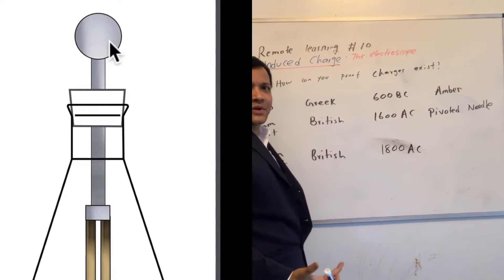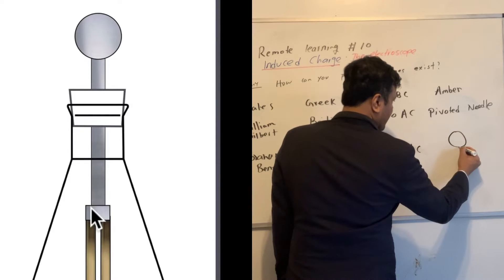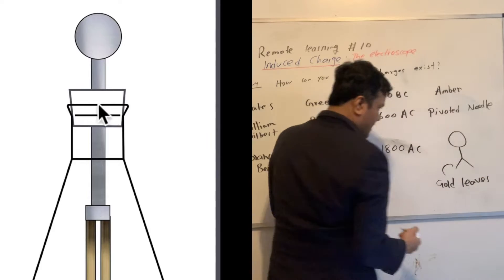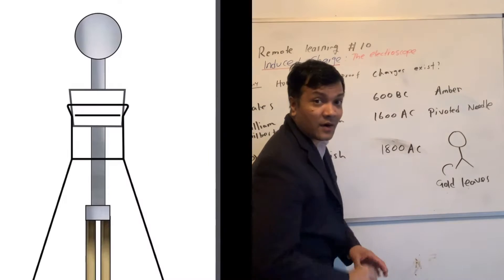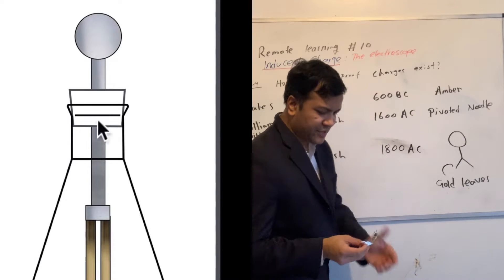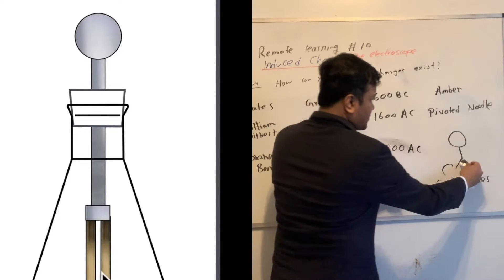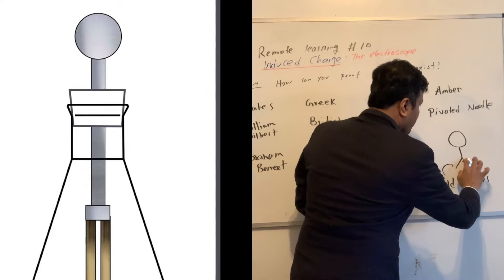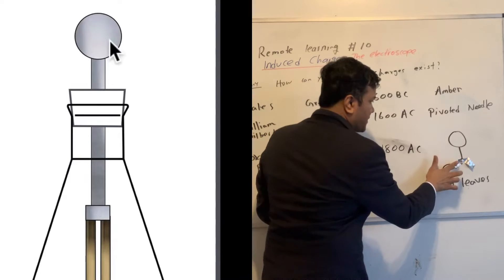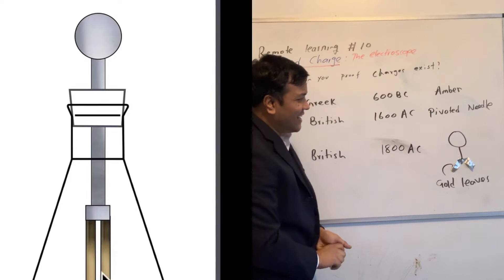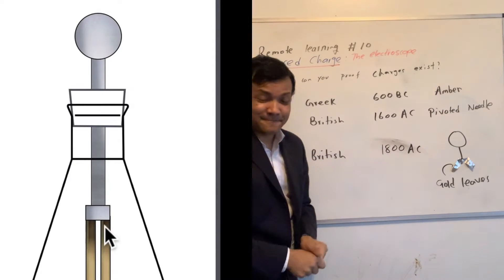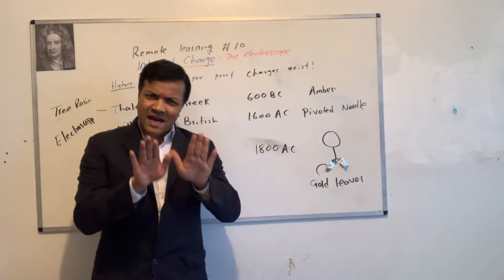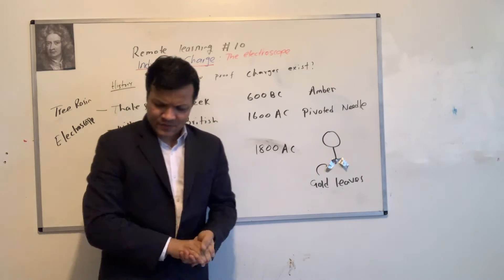I'm going to use this to make a model. I do not have gold leaves, but I do have aluminum foil which I found in my kitchen. This is what aluminum foil is. This is as sophisticated as I can make it in my home quarantine. Now I'm going to show you how the electroscope works using Abraham Bennett's electroscope design.